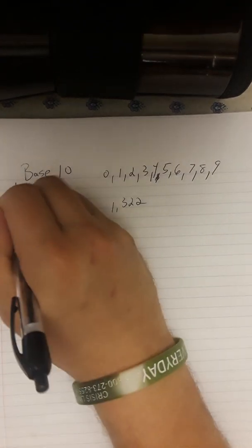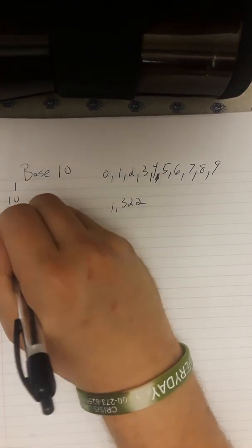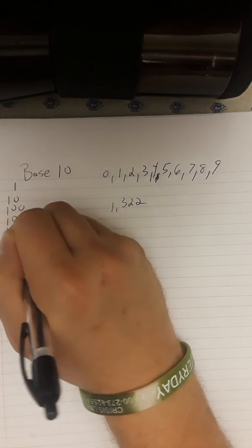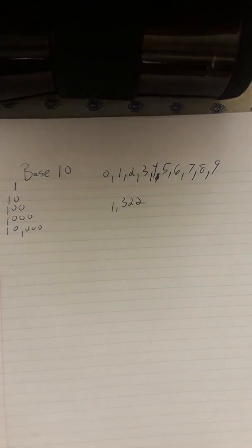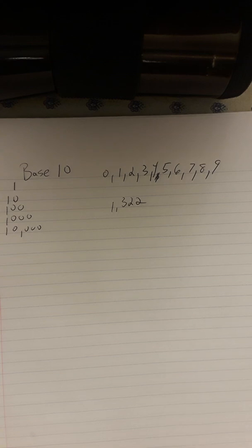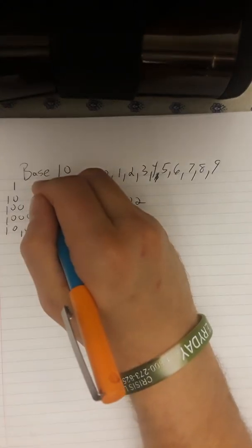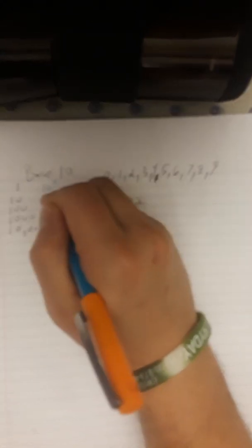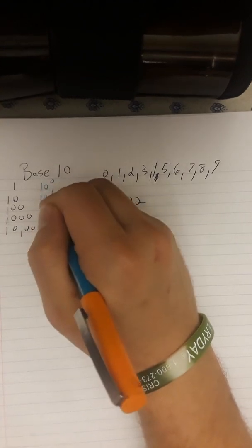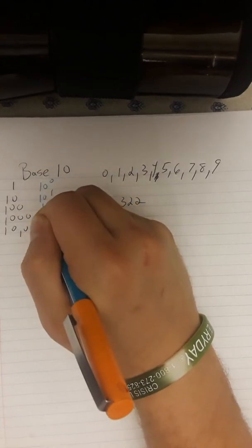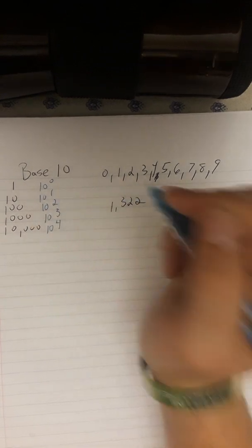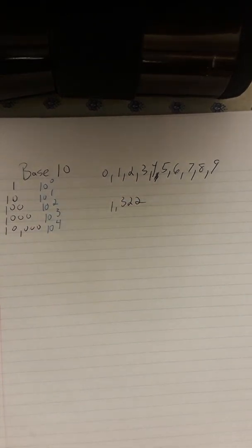First, there's the 1s placement. Then there's the 10s placement, the 100s placement, the 1,000s placement, and then we're going to go all the way to the 10,000s, just for giggles. If you're a real sleuth, you can see that 1 is 10 to the 0, 10 is 10 to the 1st, 100 is 10 to the 2nd, 1,000 is 10 to the 3rd, and 10,000 is 10 to the 4th.